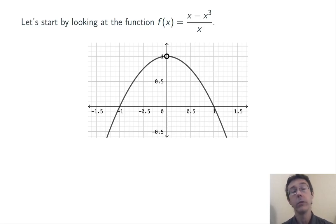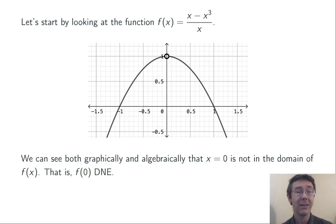Let's start with an example. f(x) equals x minus x cubed all over x. I've drawn the graph here for you. It's clear both from the graph and from the algebraic definition of the function that the domain here does not include x equals 0. f of 0 does not exist.